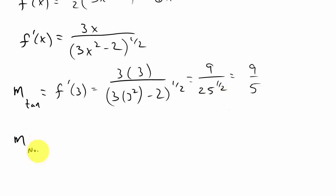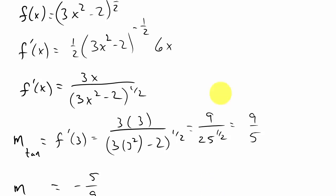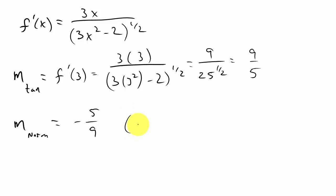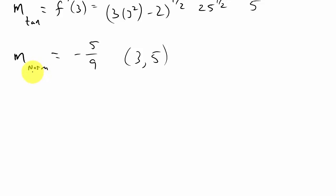So the slope of the normal line — I'll use the subscript 'norm' — is the negative reciprocal of 9 fifths, so that's negative 5 over 9. Now I have my slope, and I have my point, which is the point (3, 5).